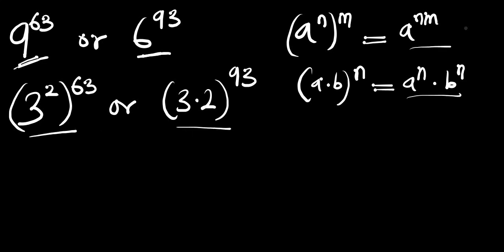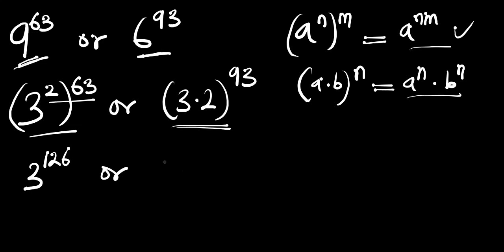For the first one, we are going to have 3 to the power of 2 times 63, which gives us 3 to the power of 126. And here we are going to have 3 to the power of 93 times 2 to the power of 93.